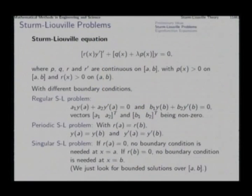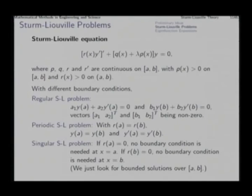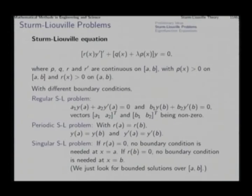With this differential equation and these kinds of boundary conditions — or no boundary conditions in the singular case — as we define a boundary value problem as the Sturm-Liouville problem, the great property of the solutions is orthogonality. And the way we have defined the problem itself, the proof of the theorem turns out to be quite straightforward.